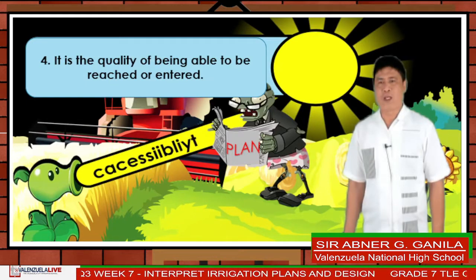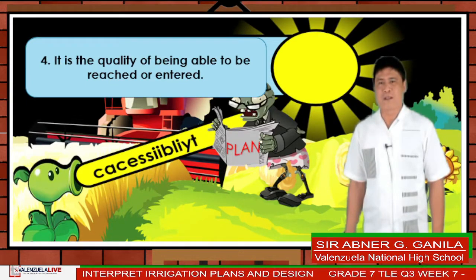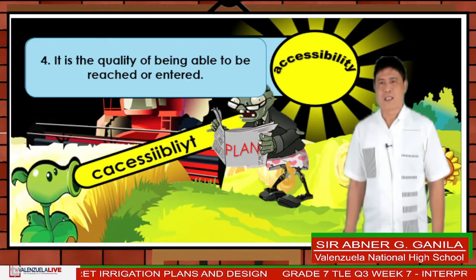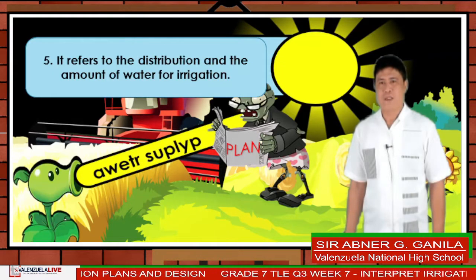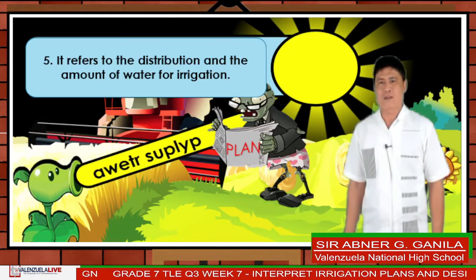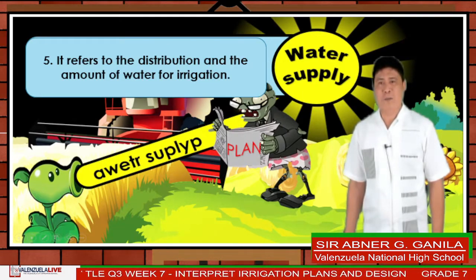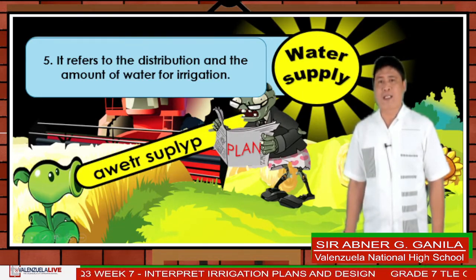Number four: the quality of being able to be reached or entered. Great — accessibility. Number five: it refers to the distribution and the amount of water for irrigation. Yes — water supply. You're doing great. Let's proceed to the next level.